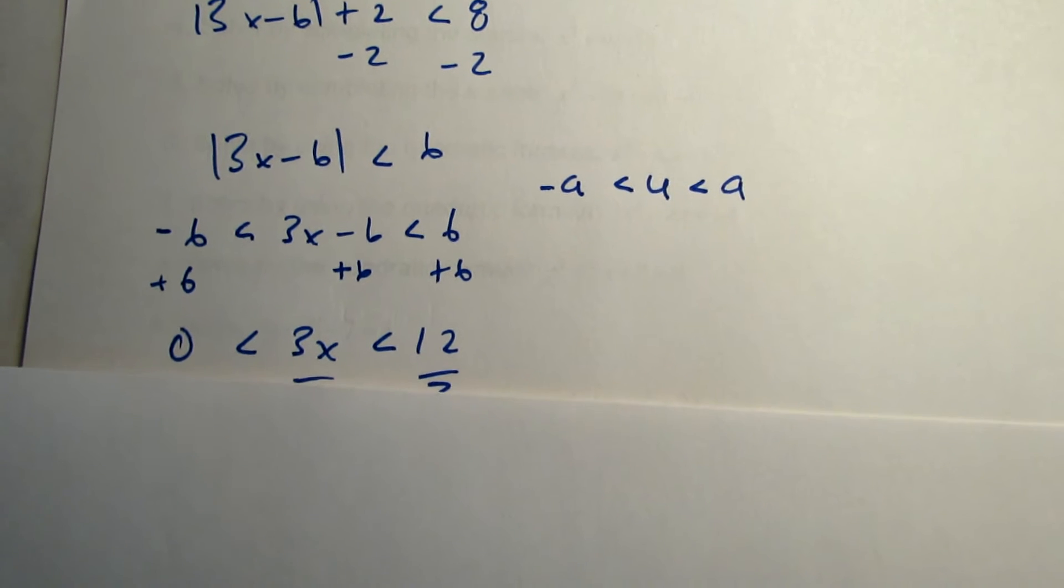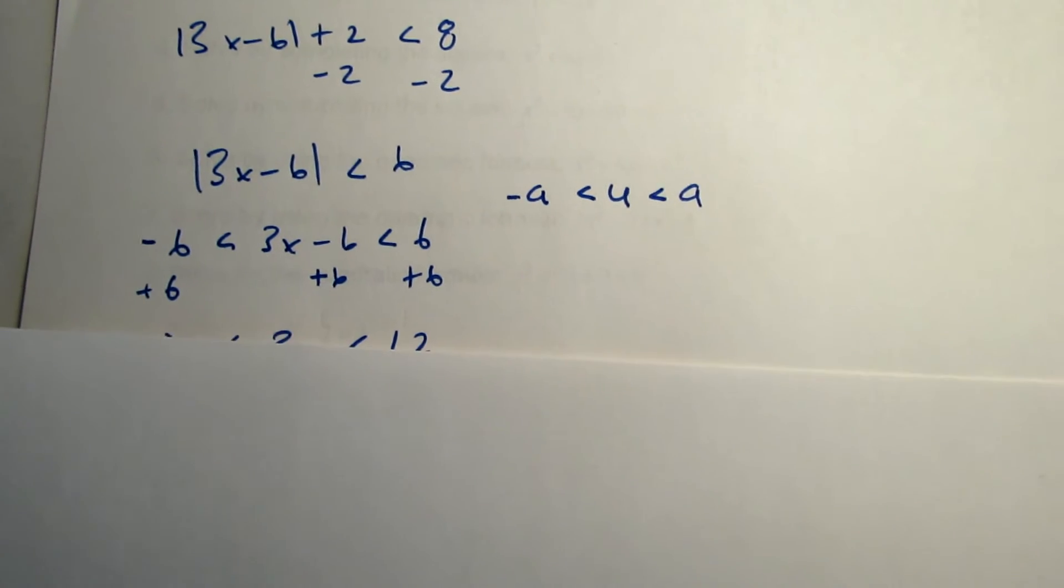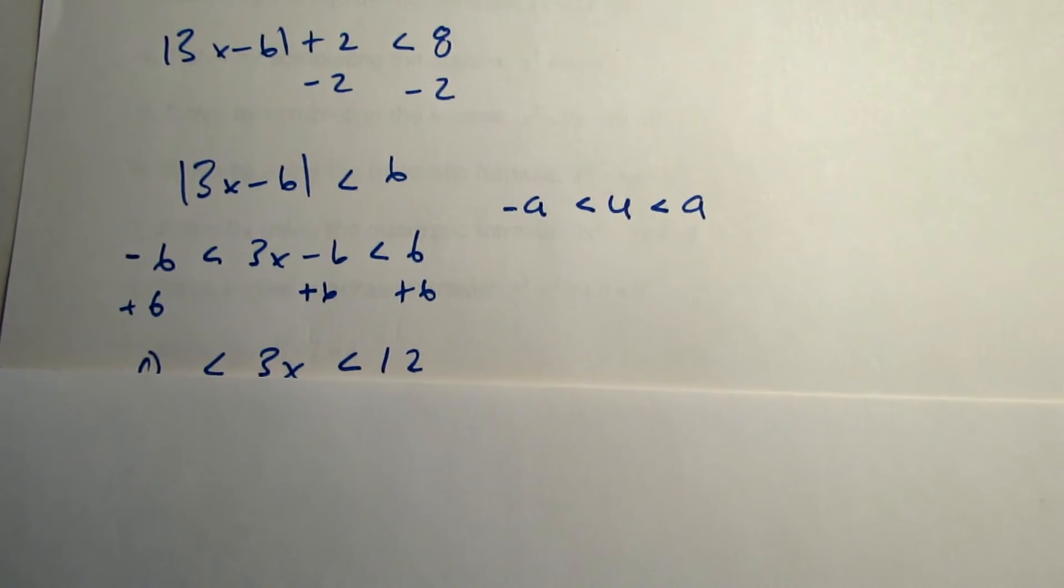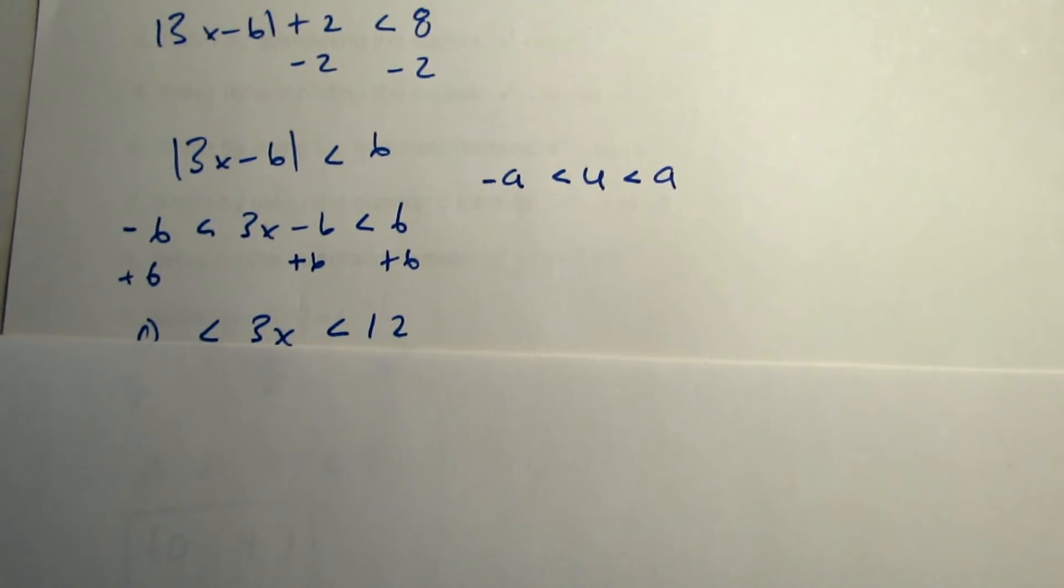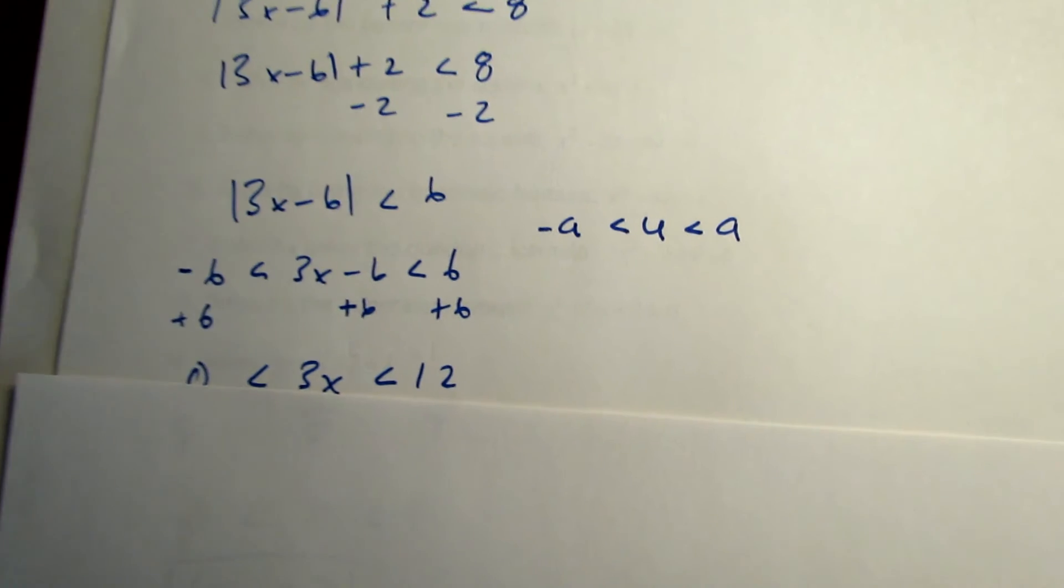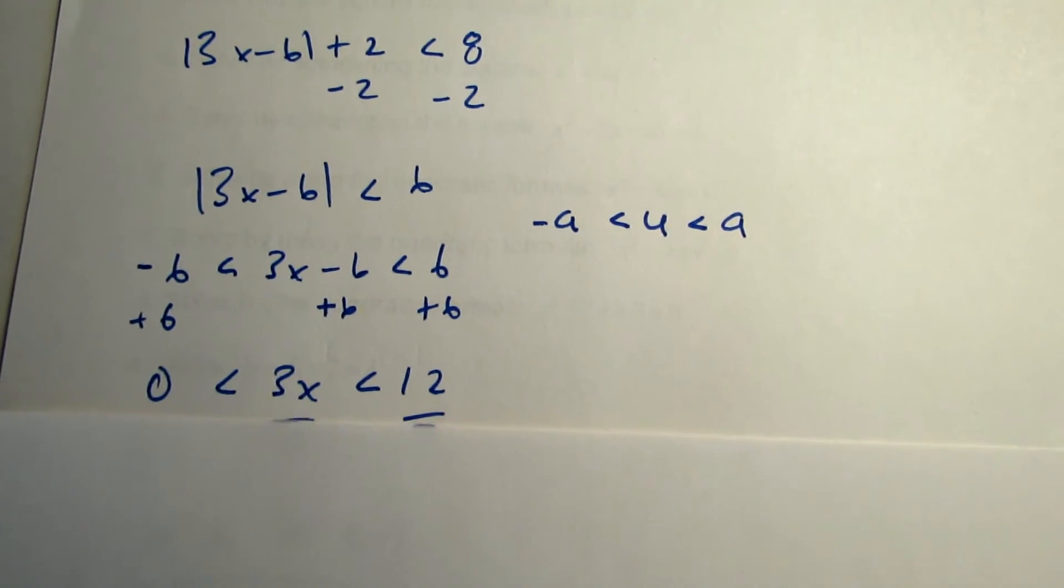Add 6 to each part. You want to add 6 to each part to isolate the 3x, and you should get 0 less than 3x less than 12.